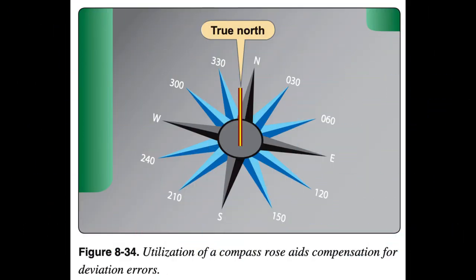The magnets in a compass align with any magnetic field. Some causes for magnetic fields in aircraft include flowing electrical current, magnetized parts, and conflict with the Earth's magnetic field. These aircraft magnetic fields create a compass error called deviation. Deviation, unlike variation, depends on the aircraft heading; also unlike variation, the aircraft's geographic location does not affect deviation. While no one can reduce variation error, an aviation maintenance technician (AMT) can provide the means to minimize deviation error by performing the maintenance task known as swinging the compass.